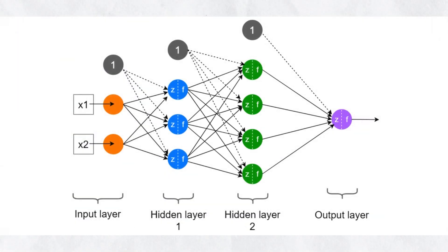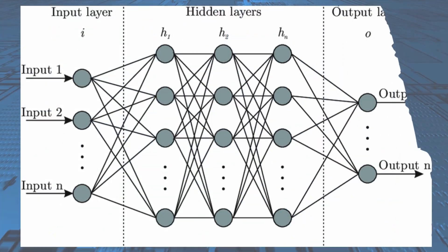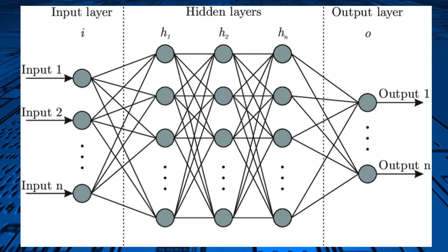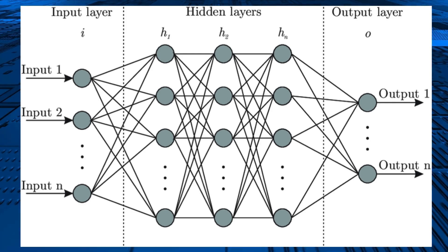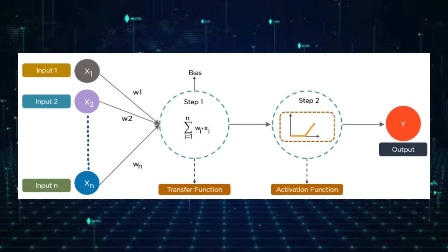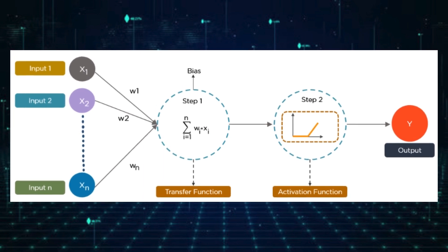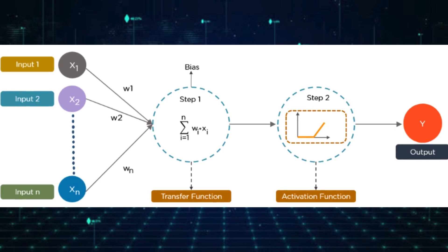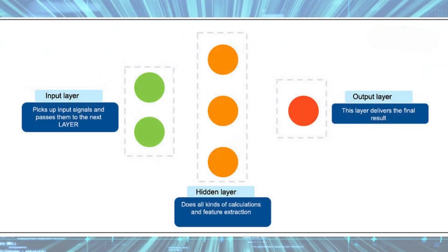The input layer accepts the raw data and passes it to the rest of the network. The hidden layers are either one or more in number for a neural network. Hidden layers are the ones that are actually responsible for the excellent performance and complexity of neural networks. They perform multiple functions at the same time, such as data transformation and automatic feature creation. The output layer holds the result or the output of the problem and produces the final prediction or classification.